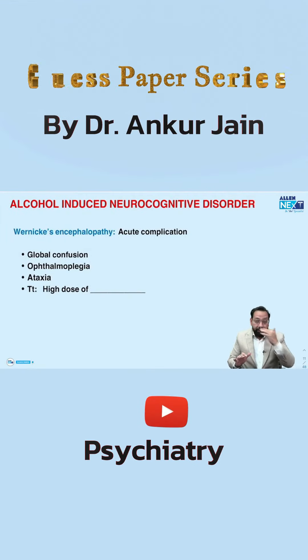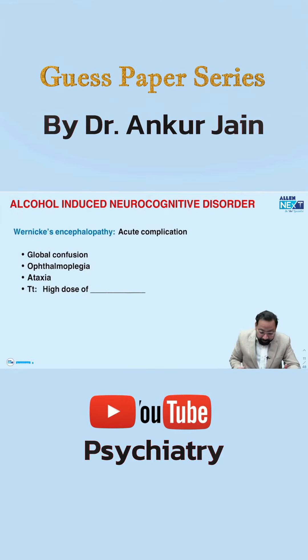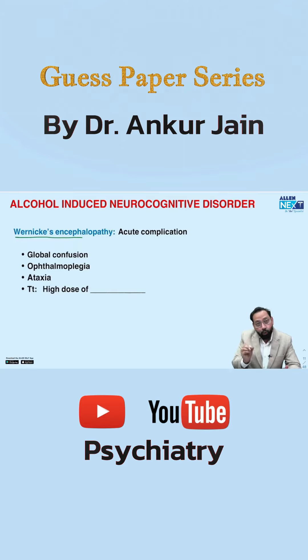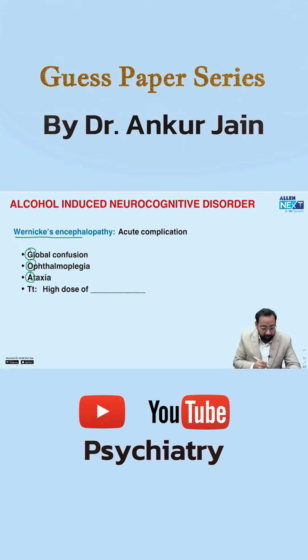Wernicke's encephalopathy question has been asked so many times. The mnemonic for Wernicke's is GOA: G for Global confusion, O for Ophthalmoplegia, A for Ataxia.